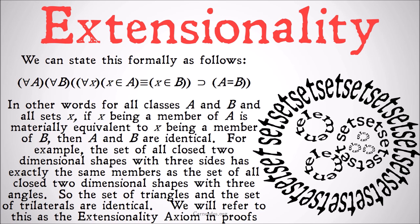For example, the set of all closed two-dimensional shapes with three sides has exactly the same members as the set of all closed two-dimensional shapes with three angles. So the set of triangles and the set of trilaterals are identical because they have exactly the same membership.